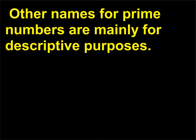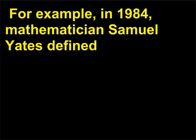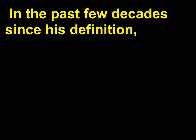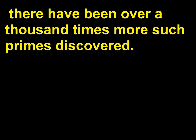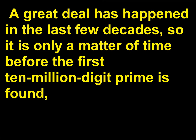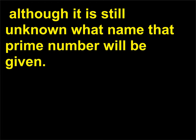Other names for prime numbers are mainly for descriptive purposes. For example, in 1984, mathematician Samuel Yates defined a titanic prime to be any prime with at least 1,000 digits. In the past few decades since his definition, there have been over a thousand times more such primes discovered. Yates also coined the term gigantic prime to indicate a prime with at least 10,000 digits. A great deal has happened in the last few decades, so it is only a matter of time before the first 10 million digit prime is found, although it is still unknown what name that prime number will be given.